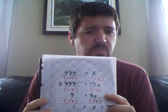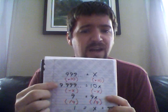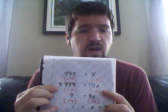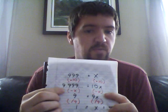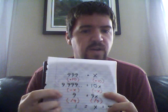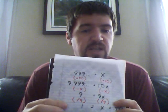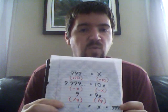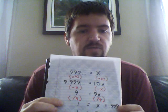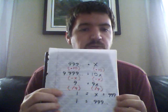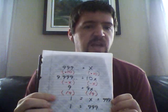0.9 repeating equals x. You multiply both sides of the equation by 10, and you get 9.9 repeating equals 10x. Subtract x, which gives you 9x here, and over here, since 0.9 repeating is x, you just take away 0.9 repeating. You have 9 equals 9x. Divide both sides by 9, and you have 1 equals x. And if x is also equal to 0.9 repeating, then 1 equals 0.9 repeating. Now this appears sound.